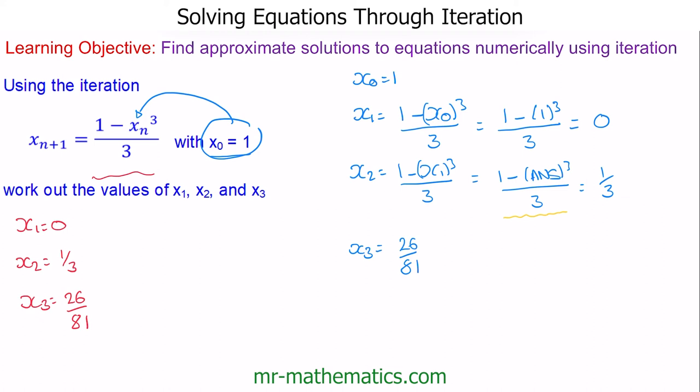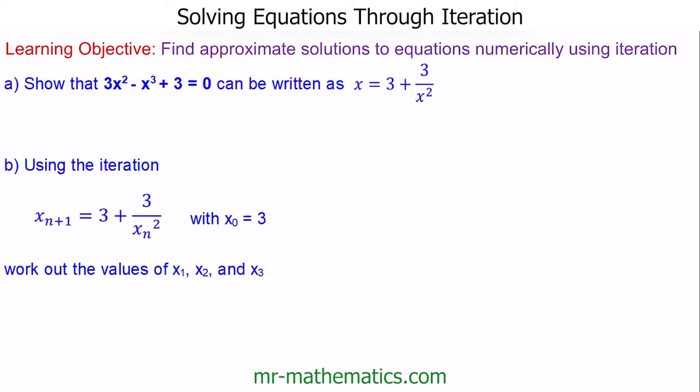Let's try one more question. Here we have an exam-style question asking us to show that 3x² - x³ + 3 = 0 can be written as x = 3 + 3/x² by rearranging. We can see that every term has been divided by x². So first, we'll divide everything by x².